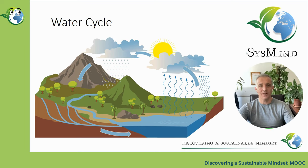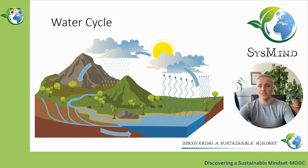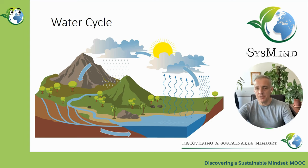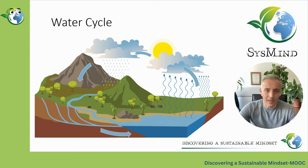The water cycle illustrates how water is constantly moving both inside the earth and in the atmosphere. It is an intricate system with numerous interconnected processes. Water vapor is created when liquid water evaporates, condenses to form clouds, then precipitates back to earth as rain or snow. The water cycle consists of four primary phases: condensation, precipitation, convection, and collection.